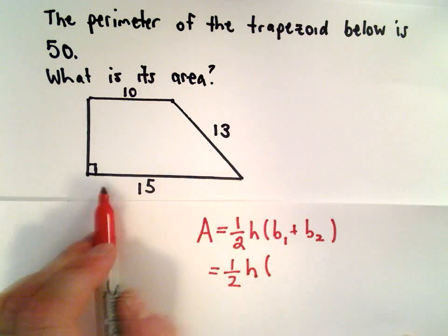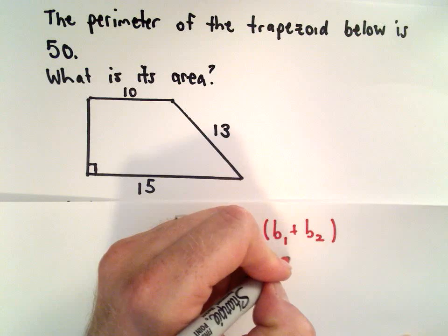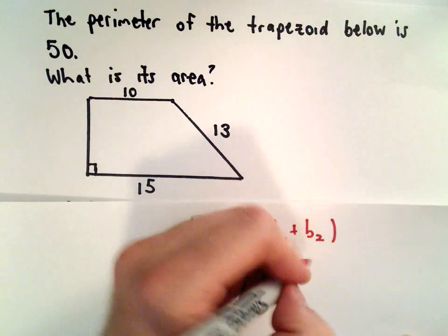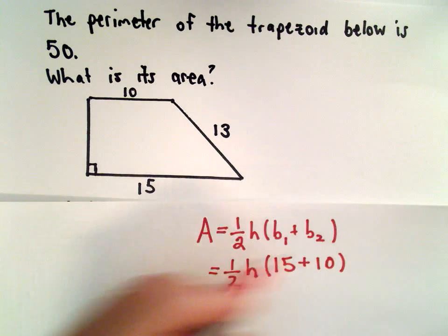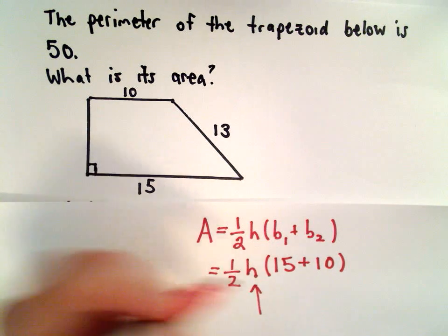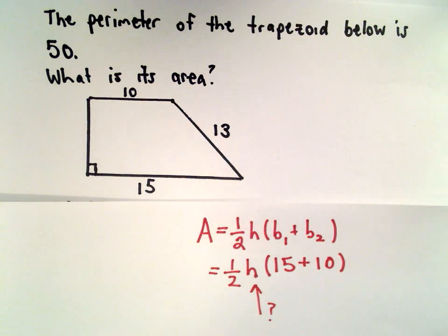Base 1, I'll just make that the bottom one. It doesn't really matter if you make it the bottom or the top. One of the bases is 15, and the other base is 10. So to figure out the area, I just need to figure out what is the height of my trapezoid.